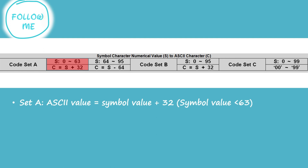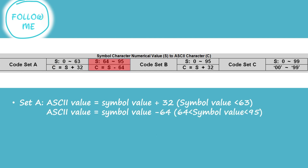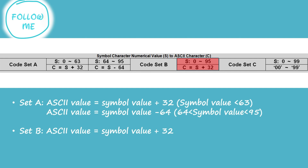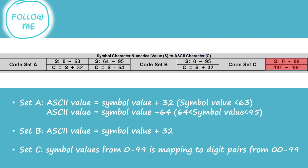Conversion rules between the symbol character values and the ASCII values are listed in the table. For code set A, the ASCII value equals symbol value plus 32 if the symbol value is less than 63; otherwise equals symbol value minus 64 if in the range from 64 to 95. For code set B, ASCII value equals symbol value plus 32 if the range is from 0 to 95. For code set C, symbol values from 0 to 99 map to digit pairs from 00 to 99.